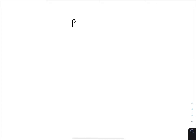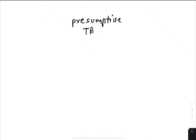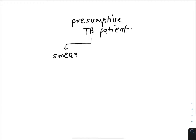Today we'll talk about a recent AIMS question regarding the diagnostic algorithm of pulmonary TB. First, a presumptive TB patient is one who has a high chance of having active TB. From such a patient, you take two samples — one on-the-spot and one early morning — and first perform smear examination.